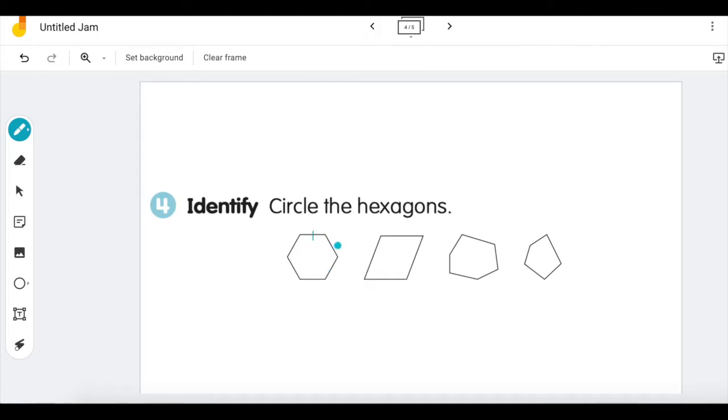So one, two, three, four, five, six. Six sides so this first one is a hexagon. I'll let you do the other ones on your own.